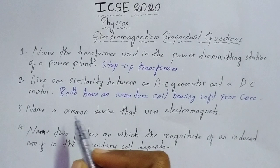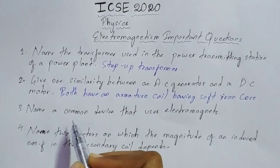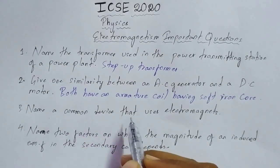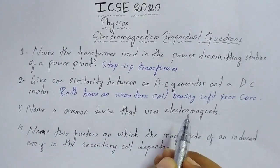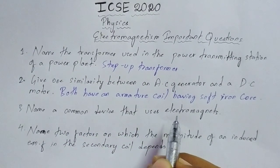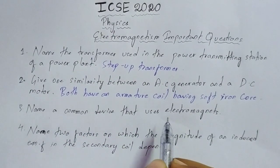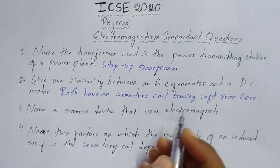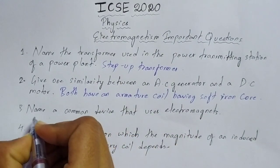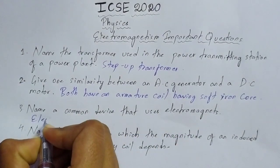Question number three: name a common device that uses an electromagnet. The example is electrical bells.